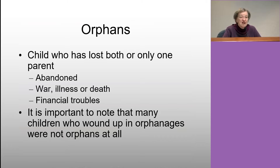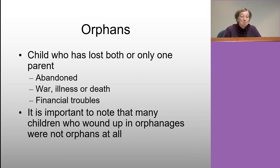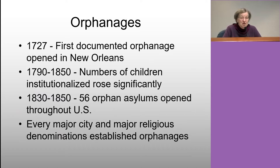Besides illegitimacy, we need to look at orphans. An orphan is a child who has lost either one or both parents, whether through abandonment, death, illness, or financial difficulty. Importantly, children in an orphanage might not be orphans at all — they may still have both living parents or one living parent. The first documented orphanage opened in New Orleans as early as 1727, which is very early. During industrialization between the 1790s and 1850s, the numbers of children in these institutions rose significantly.